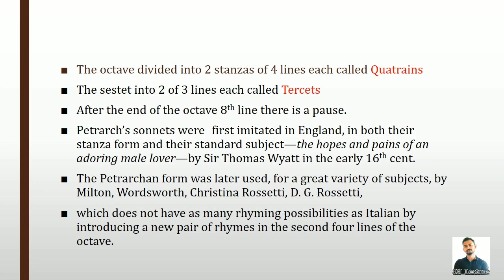It was written by Sir Thomas Wyatt in the early 16th century. Sir Thomas Wyatt was the first to write a sonnet in England. We have many writers in Latin, but when it comes to English, Sir Thomas Wyatt started it. The Petrarchan form was later used for a great variety of subjects by John Milton, Wordsworth, Christina Rossetti, and Dante Gabriel Rossetti.